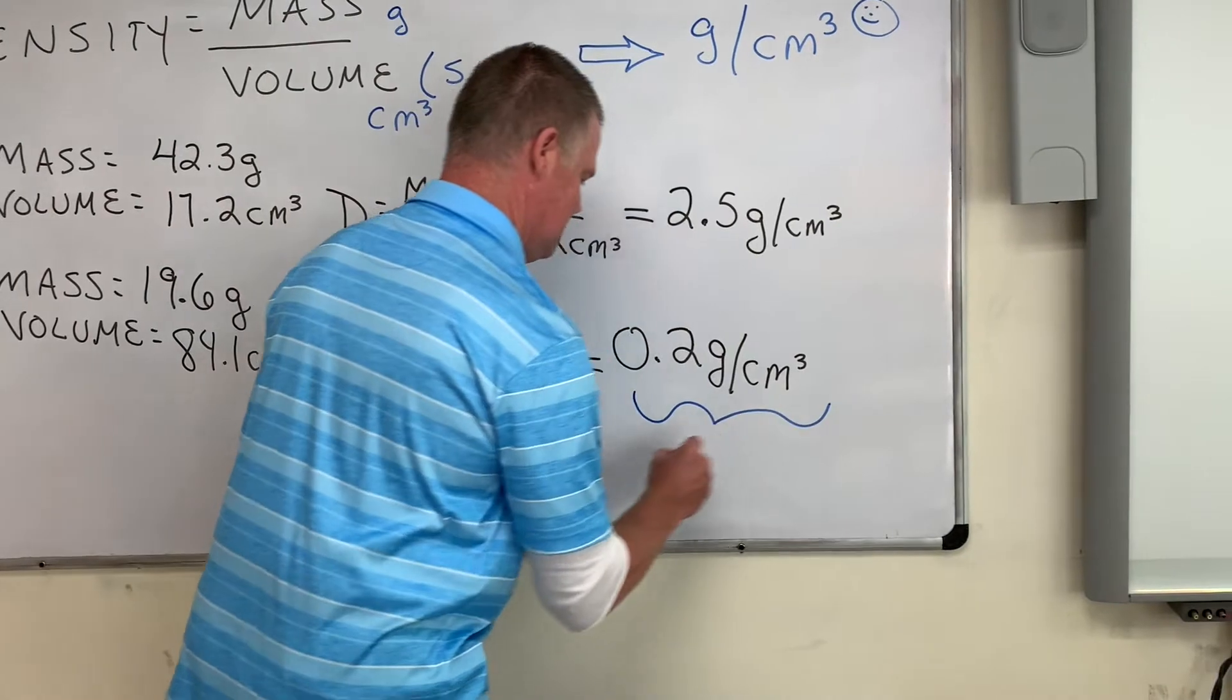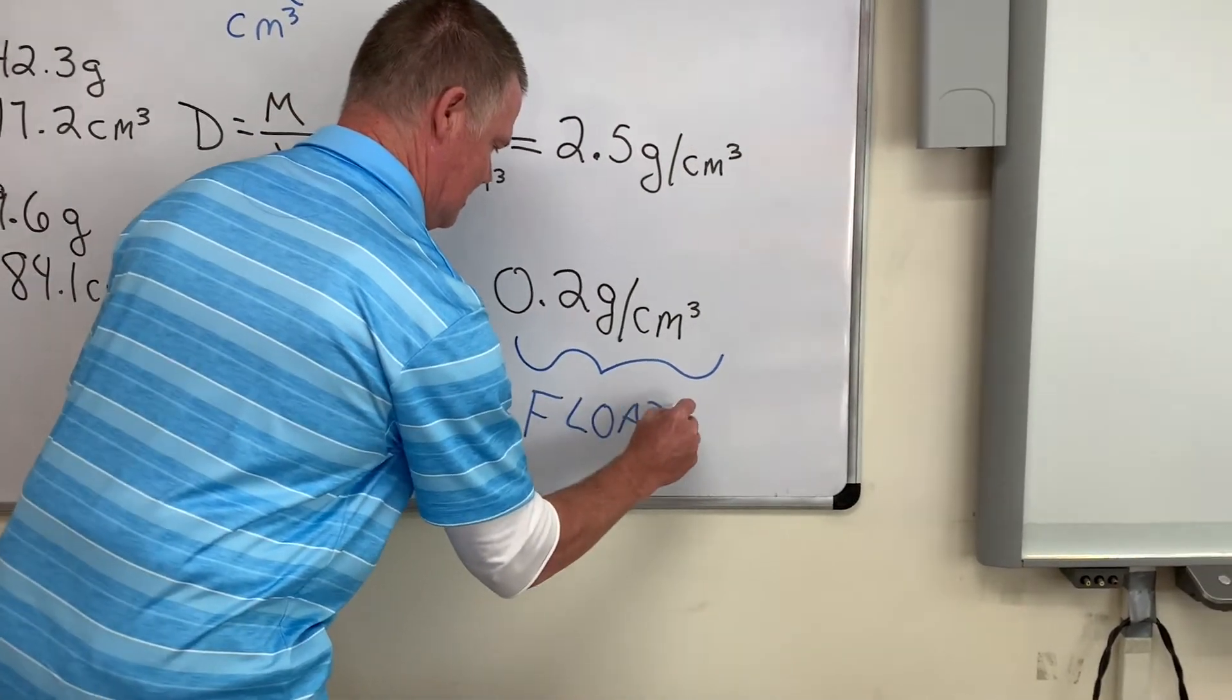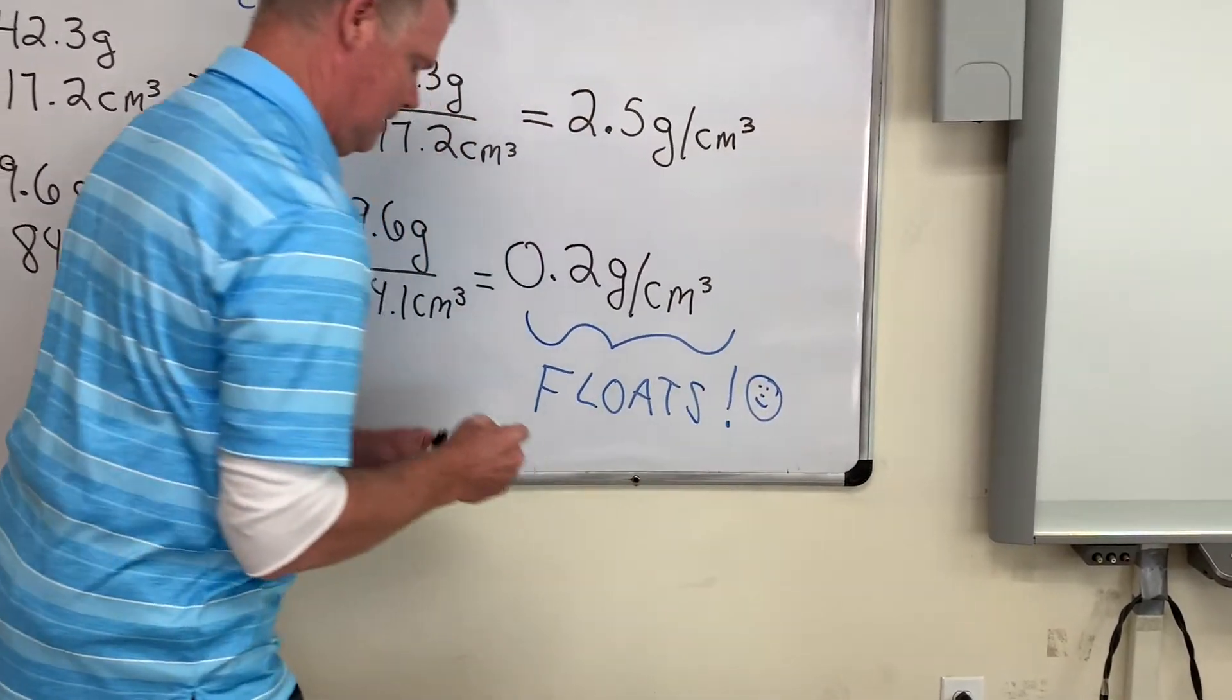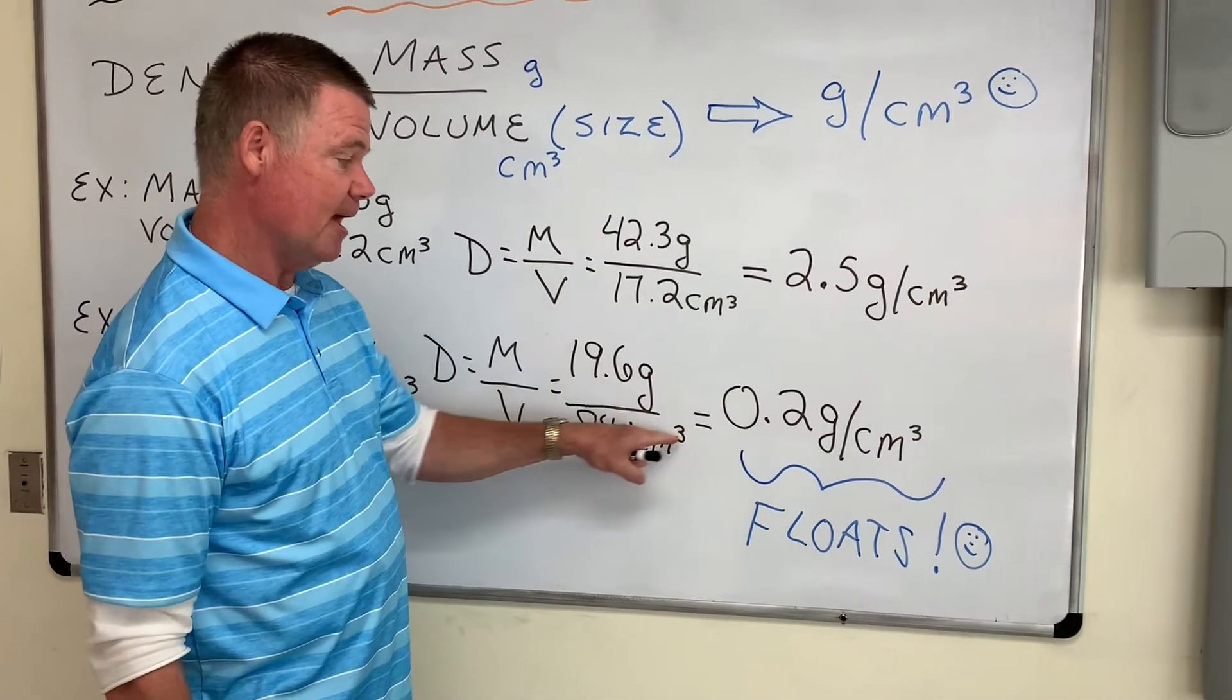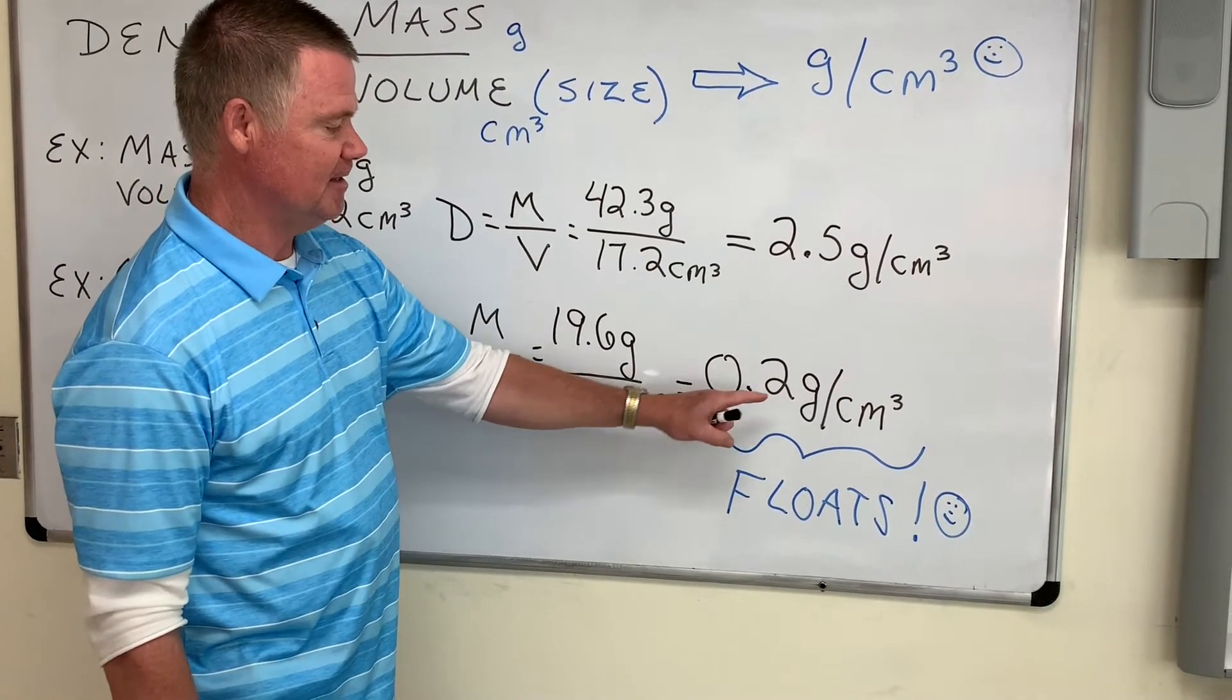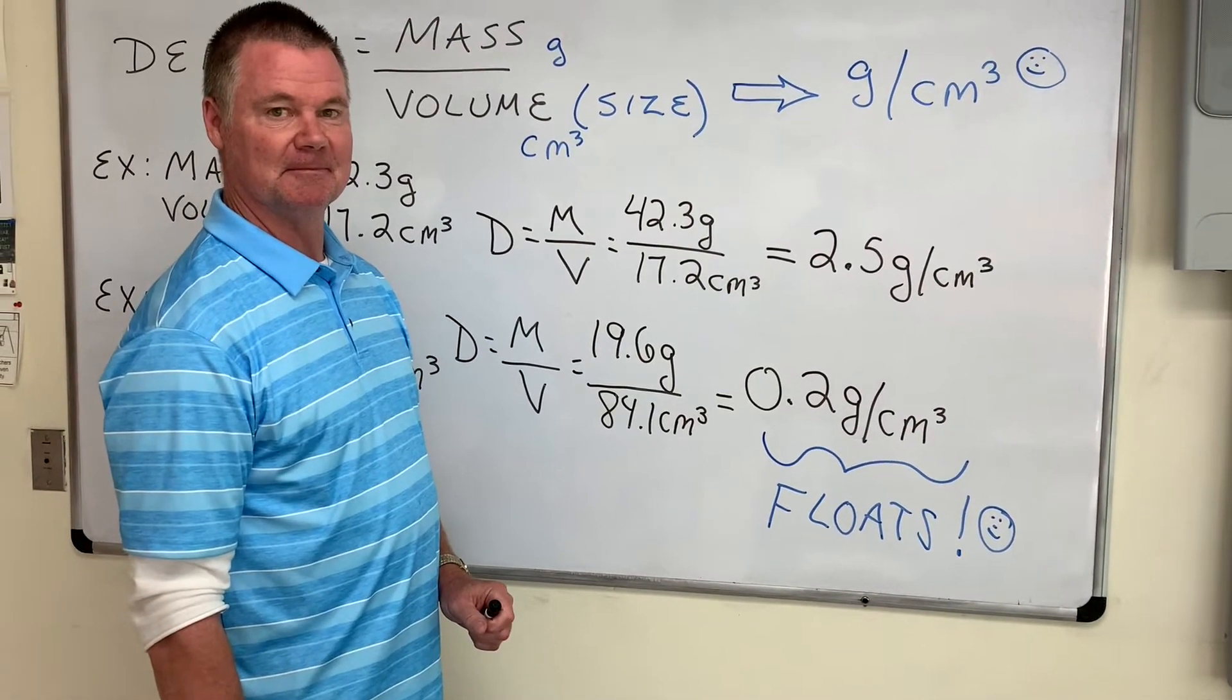How cool is it that we can do the calculation for density, but also make the inference that whatever this object is, we know it will float in water because it's less dense than 1.0. Very cool.